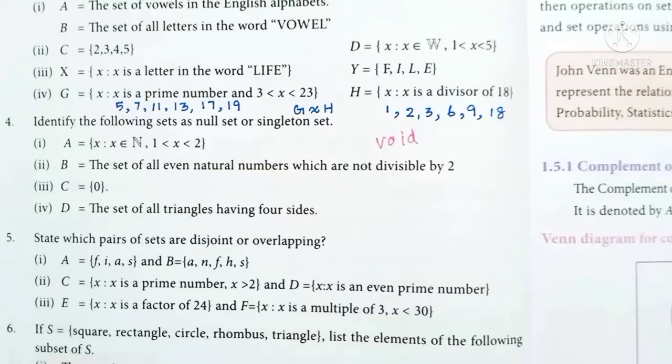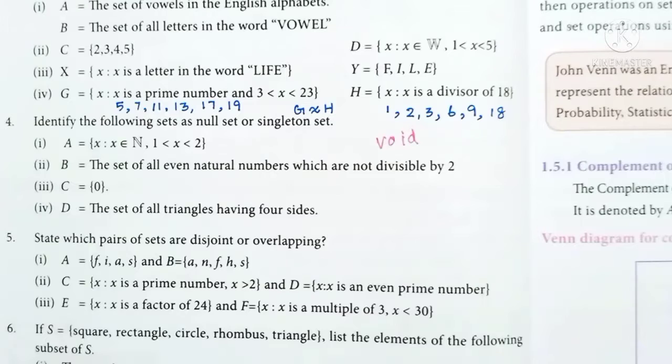For example, a set of even prime numbers. If you have 2, 3, 5, 7, 11, in this set, number 2 is the only even prime.